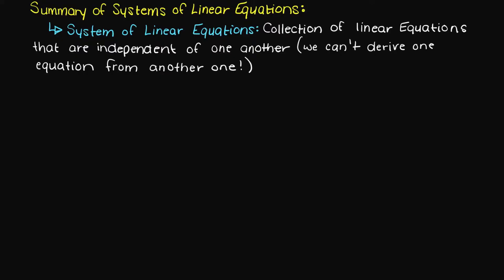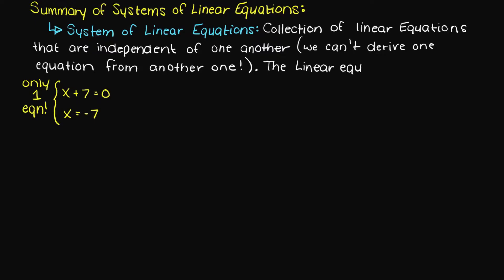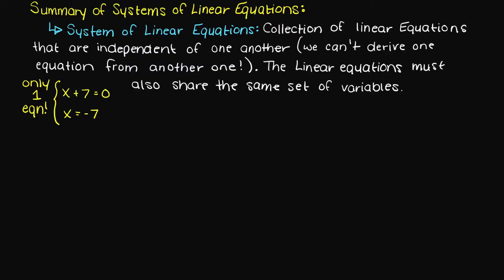This essentially means that we can't say we have two equations if both of our equations are x plus seven equals zero and also x equals minus seven — they are the same thing, just with seven subtracted from both sides. Also, all of the linear equations need to be related in some way and share the same set of variables.